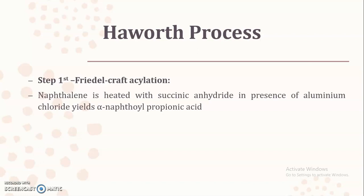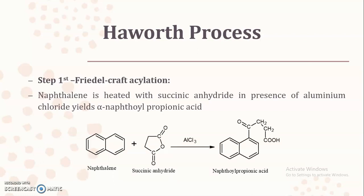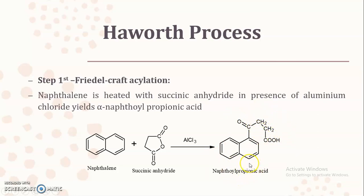The first step is Friedel-Crafts acylation. Naphthalene is heated with succinic anhydride in the presence of aluminium chloride to yield alpha-naphthylpropionic acid. Here you can see that reaction — naphthalene reacted with succinic anhydride using AlCl₃ as a catalyst gives alpha-naphthylpropionic acid. The naphthalene ring is visible, connected to a carbonyl functional group, and as three carbon atoms are present it is known as propionic acid, giving us naphthylpropionic acid after step one.